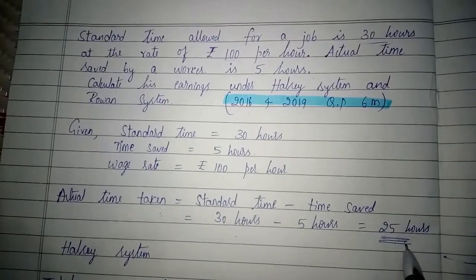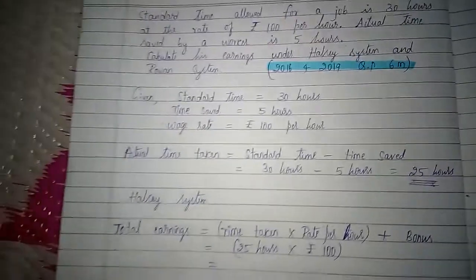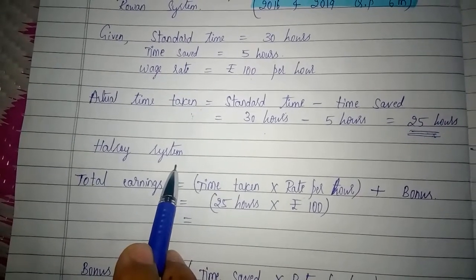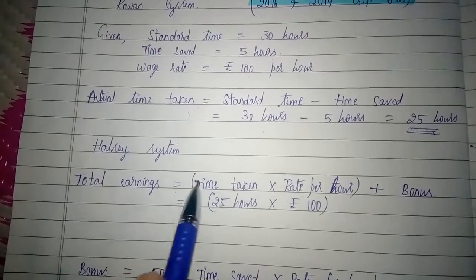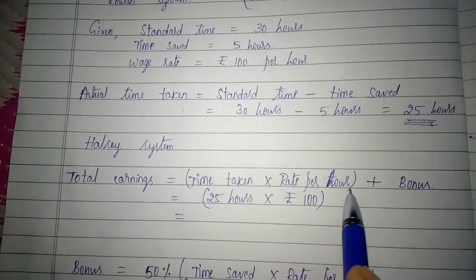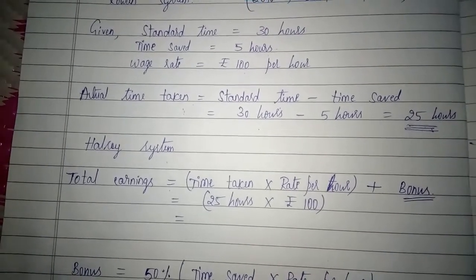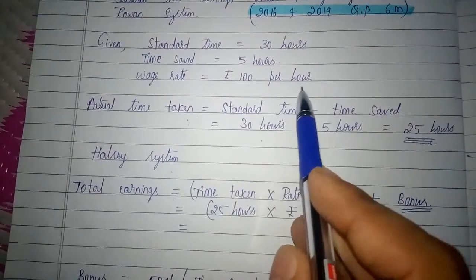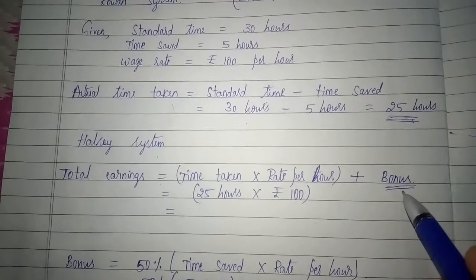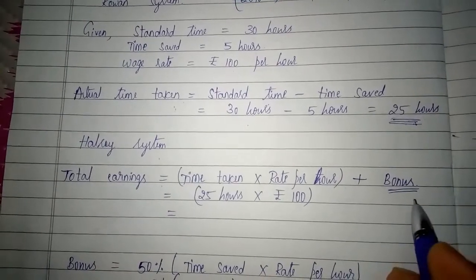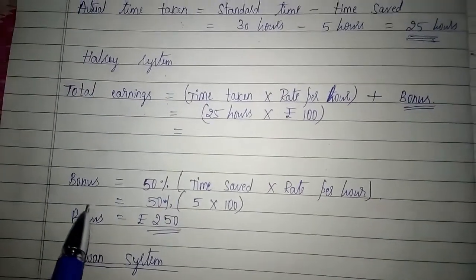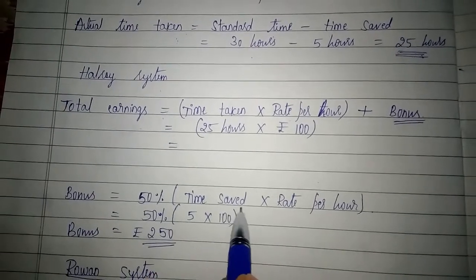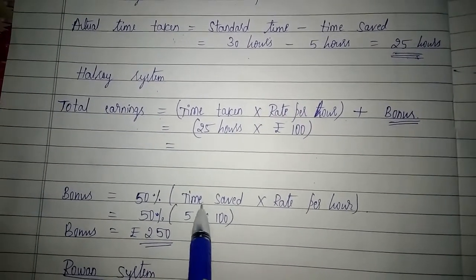Now let us calculate the earnings of the worker under Halsey system, which is also known as the Halsey plan. Total earnings = time taken × rate per hour + bonus. Time taken we have already calculated as 25 hours, and rate per hour is rupees 100. We still need to calculate the bonus. Under Halsey system, bonus is calculated using the formula: 50% of time saved × rate per hour.